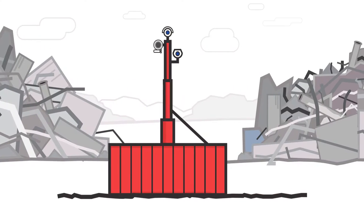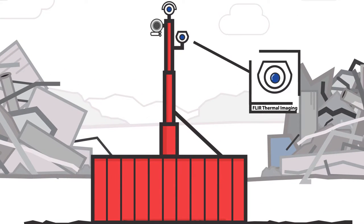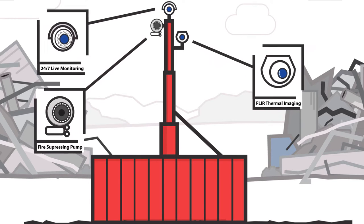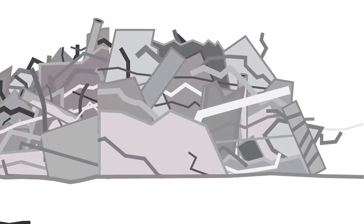Fire Rover is the world's only proactive fire prevention system that detects and extinguishes fires before they start. Here's how it works.